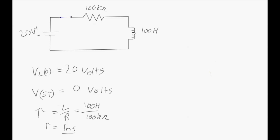Inductors work in the opposite manner. The initial voltage drop across an inductor when the circuit is closed is going to equal the voltage of the power supply. So in this case the power supply is 20 volts — at time zero, when the switch has just been closed, the voltage across the inductor is going to be 20 volts.